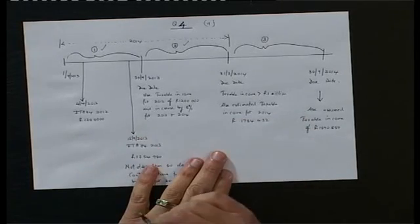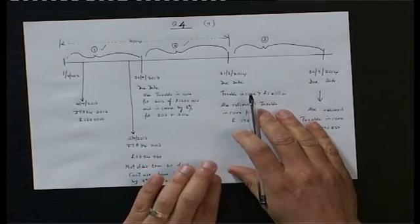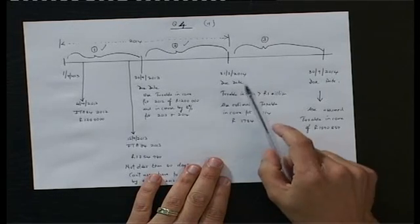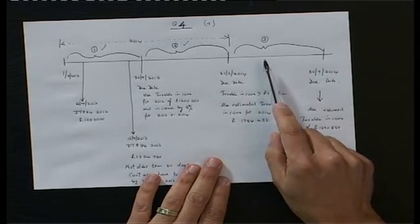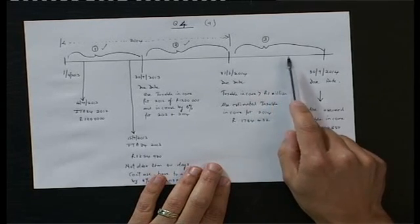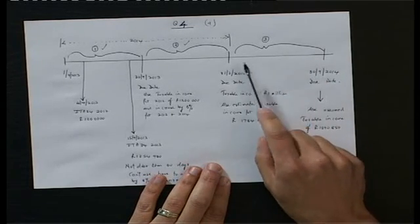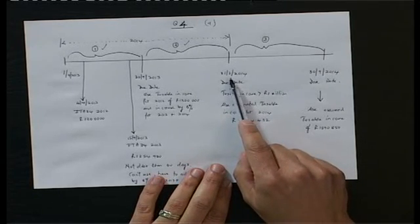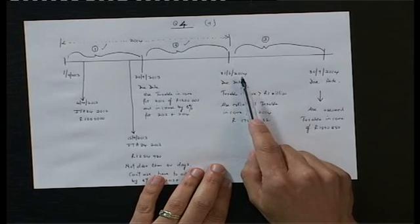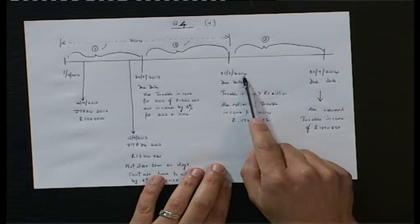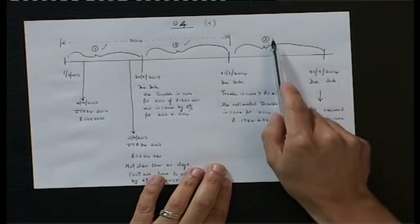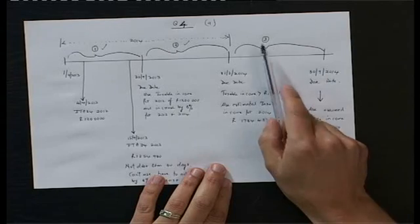Because the company's taxable income exceeds R1 million, it has the option of making a third non-compulsory provisional tax payment — a topping-up payment. Because the year end is 31 March 2014, this payment must be made within six months after the year end, which falls on 30 September 2014. That will be the additional third payment.